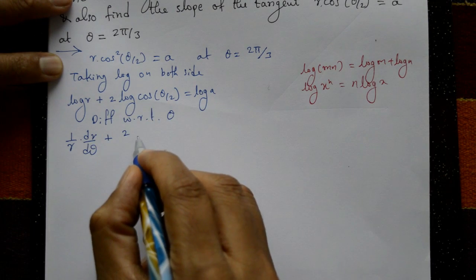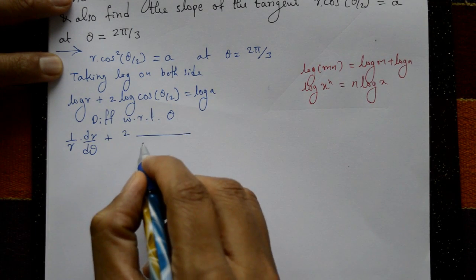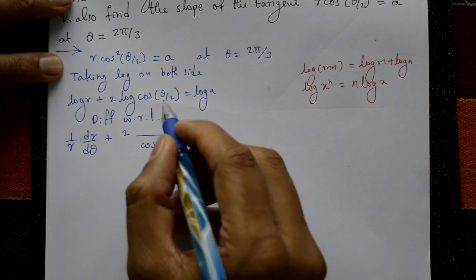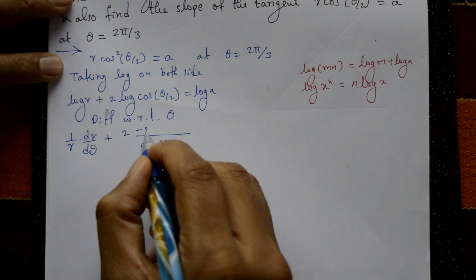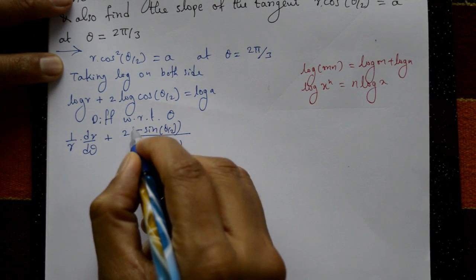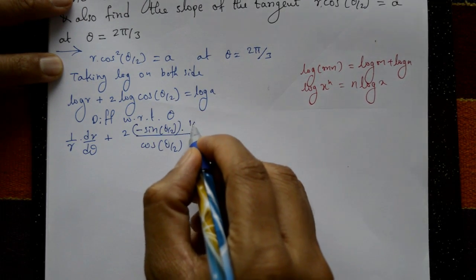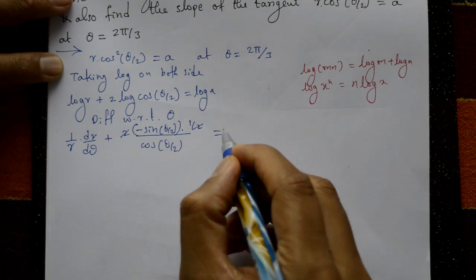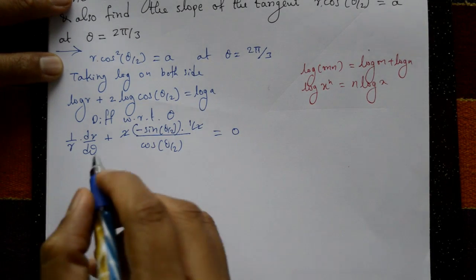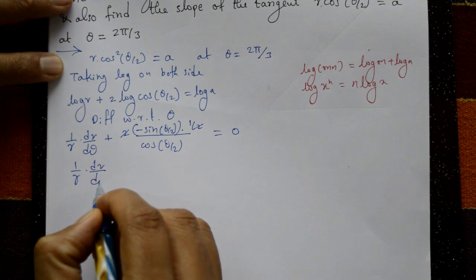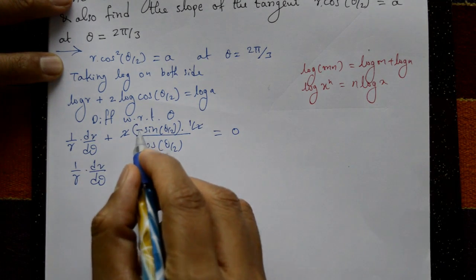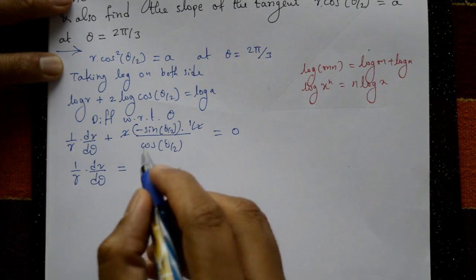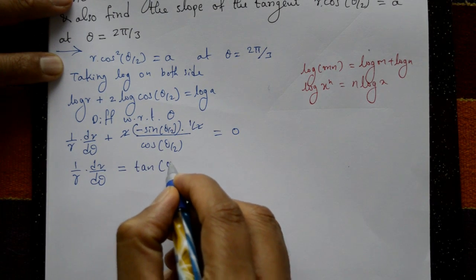Differentiating: 2 times (1/cos(θ/2)) times differentiate cos — which gives −sin(θ/2) times (1/2). The 2 cancels, and log a differentiates to 0. So (1/r)·(dr/dθ) equals −sin(θ/2)/cos(θ/2), which is −tan(θ/2).